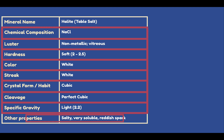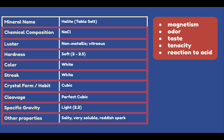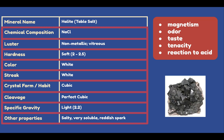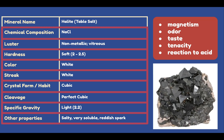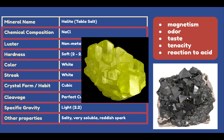Other properties include magnetism, odor, taste, tenacity, and reaction to acid, among others. For example, magnetite is a strongly magnetic mineral. We also have sulfur, which has a very distinctive rotten egg smell. And halite, of course — table salt — is salty.